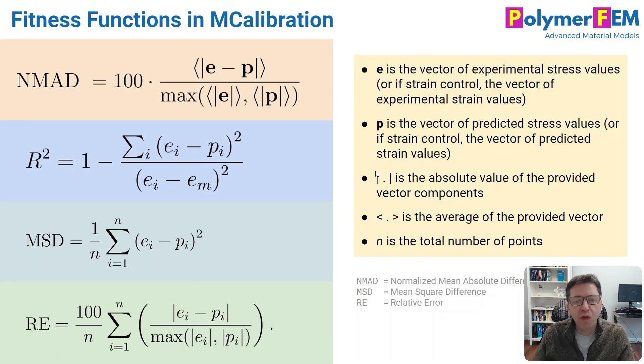In MCalibration, there are four types of fitness functions to choose between. The ones that I typically recommend are NMAD and now the new one RE, but there's also a mean square difference value and R-square, the coefficient of determination. I tend to not use those as much.